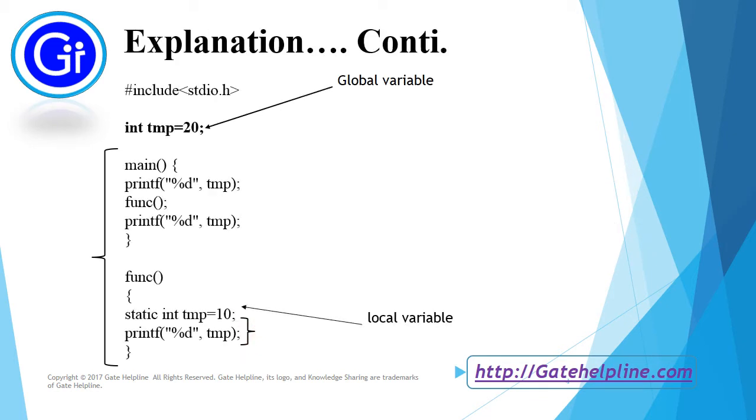So friends, now we know that the scope of the temp int temp equals to 20 is the entire program and this static int temp equals to 10 is having the scope within this function func only.